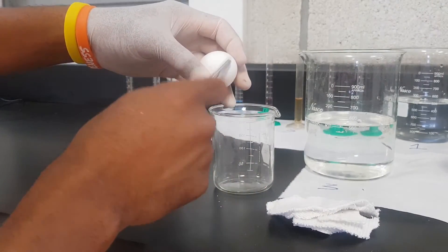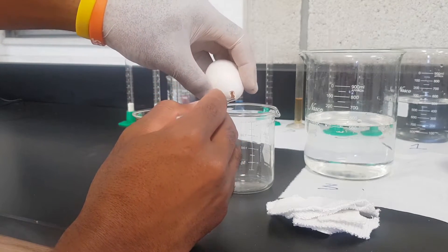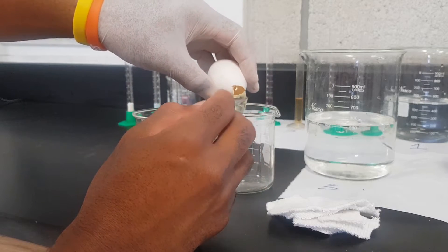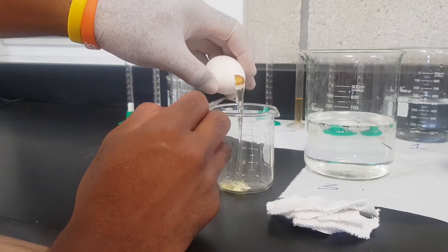We're going to make a small incision on the top. We're going to remove the egg white, which is the albumin. We only want the yolk.